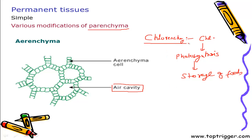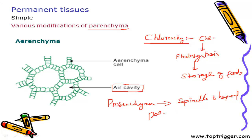Similarly, there is another modification called prosenchyma. Prosenchyma are spindle-shaped parenchyma cells meant for protection. These are slightly modified forms of parenchyma. The prime function of parenchyma is storage, but depending upon certain modifications, they can also perform other functions — as seen in aerenchyma, where the presence of air cavities helps in maintaining hydrophytic life.